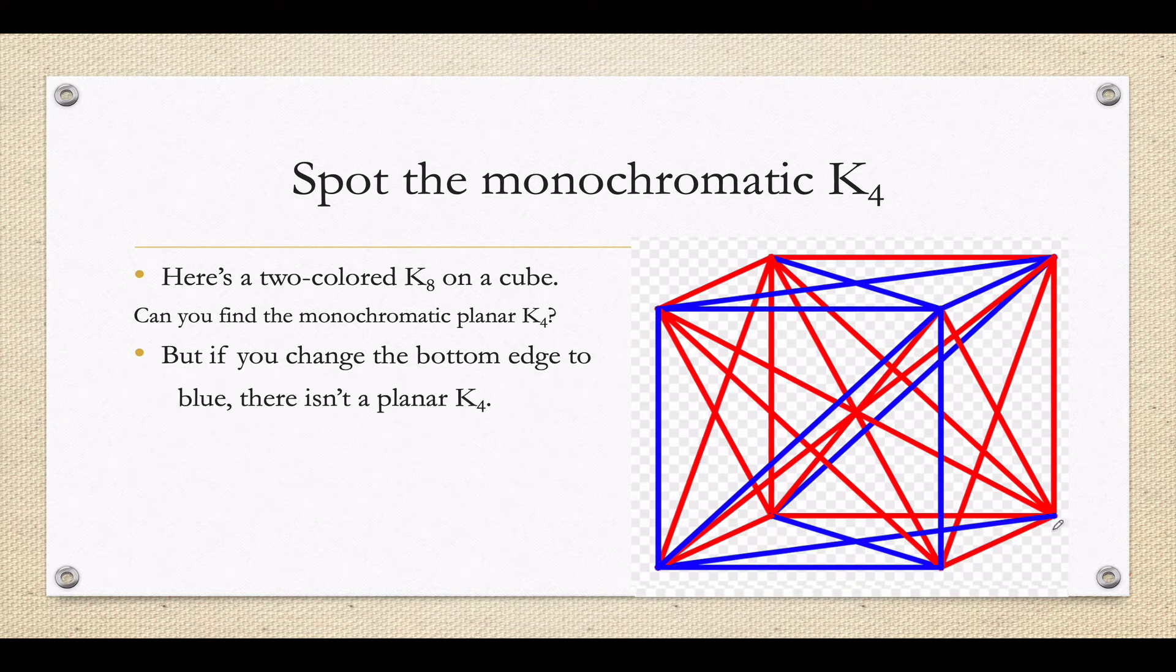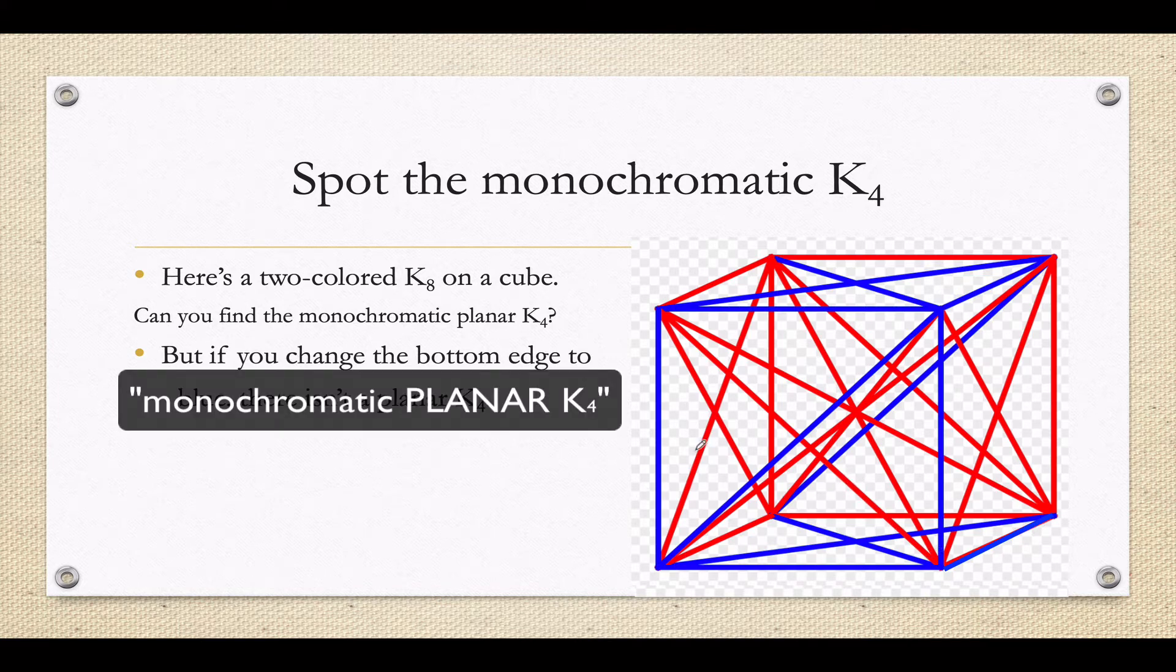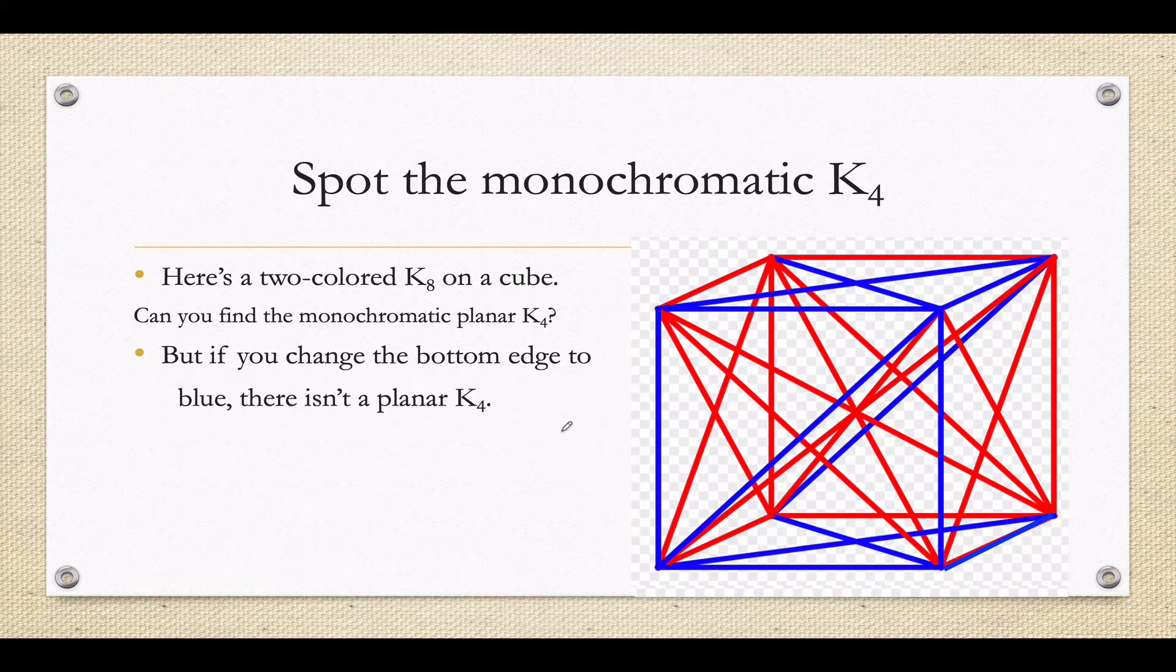However, if I take this edge down here at the bottom, and I switch it. Right now, it's red, and it's part of that monochromatic planar K4. If I switch it to blue, then I will no longer have a monochromatic K4. What is currently pictured is an example, a counterexample.